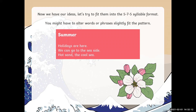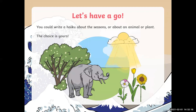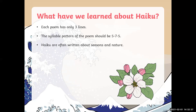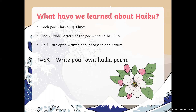Holidays are here. We can go to the seaside. Hot sand, the cool sea. So let's have a go! You could write a haiku about the seasons, or about an animal or plant — the choice is yours. Remember, each poem has only three lines, the syllable pattern should be 5, 7, 5, and haiku are often written about seasons and nature. Your task for today is to write your own haiku poem, remembering those three things we've learnt. Once you've written it, we'll have a go at writing another one. Don't forget to upload your haiku poems to our class Padlet page. Good luck, year five — can't wait to read them!